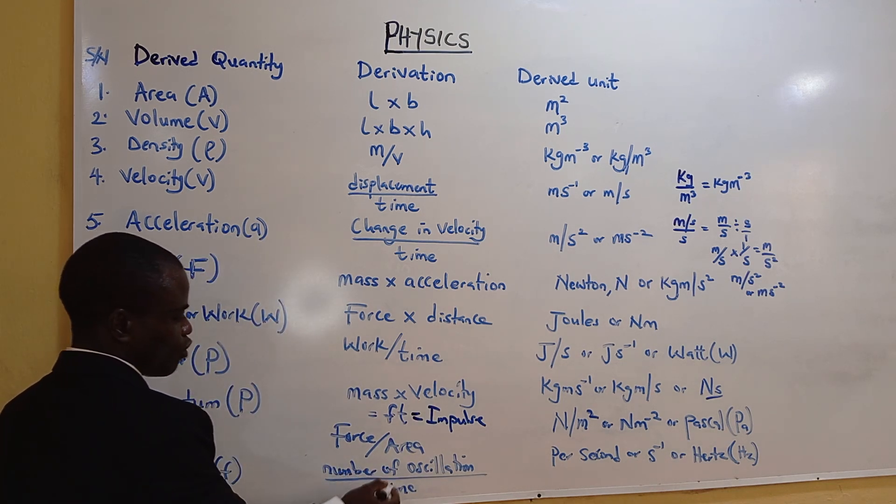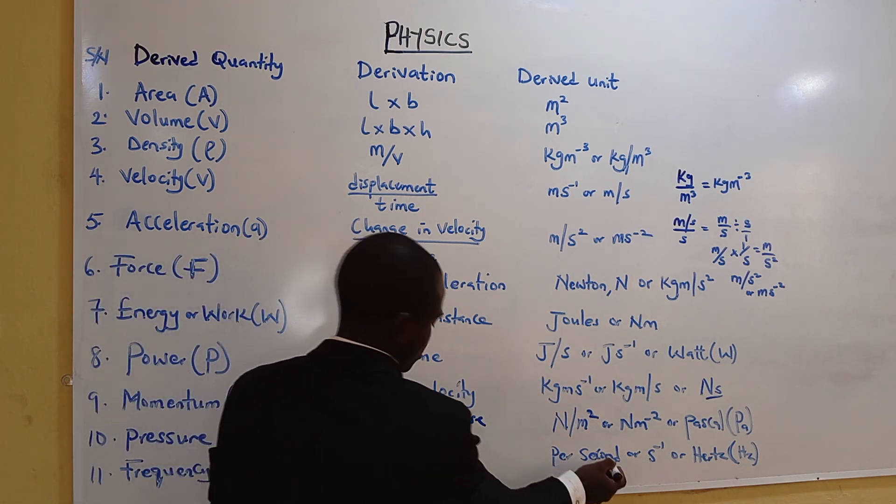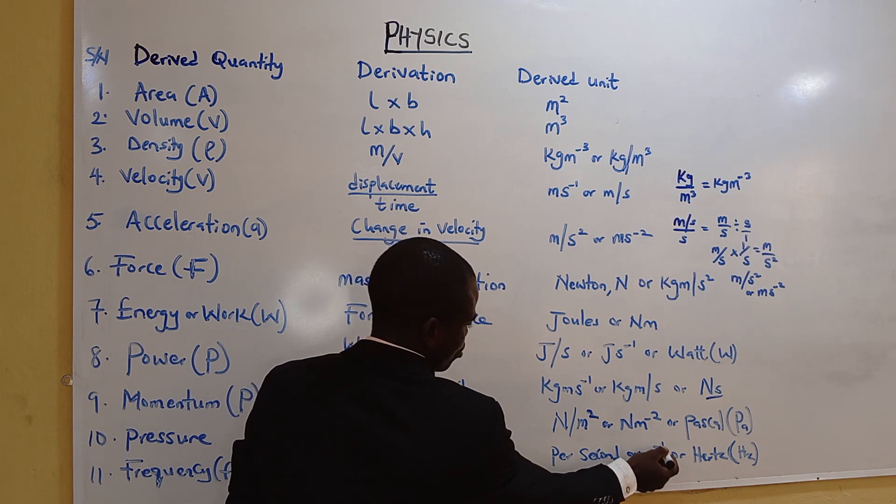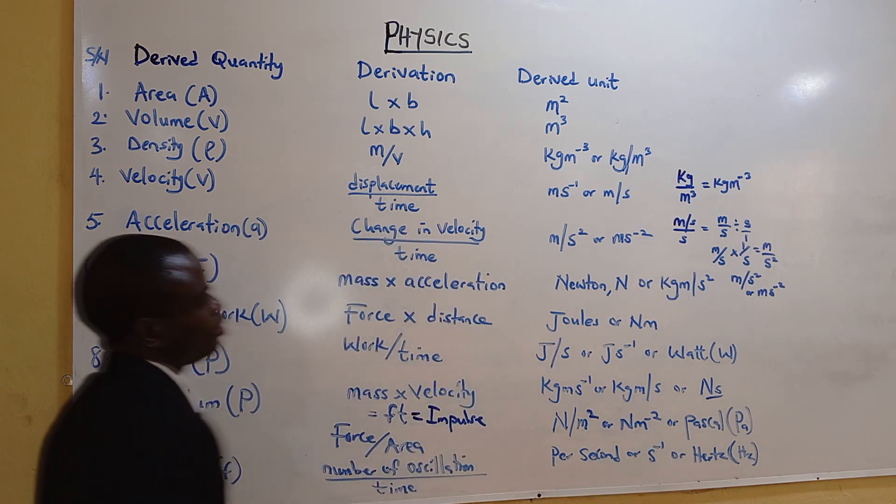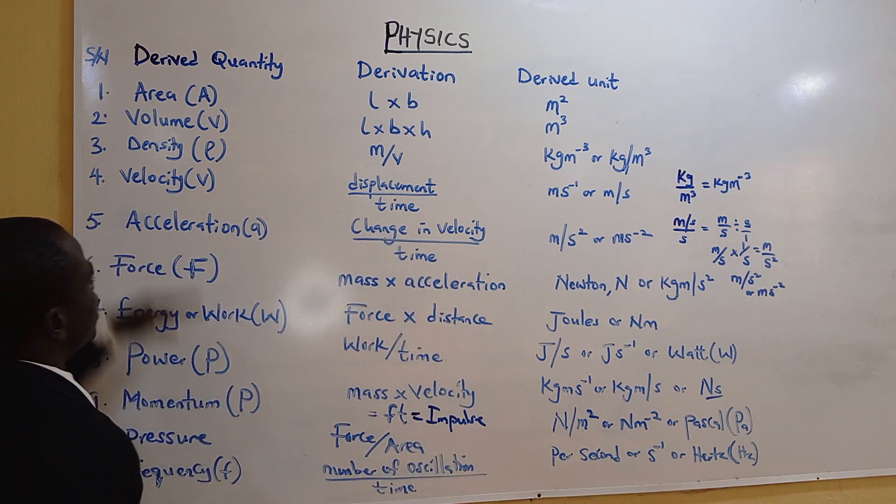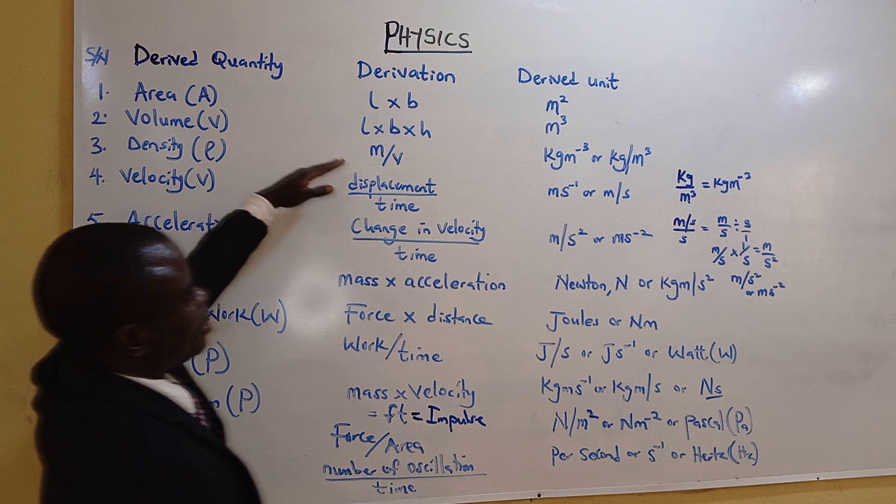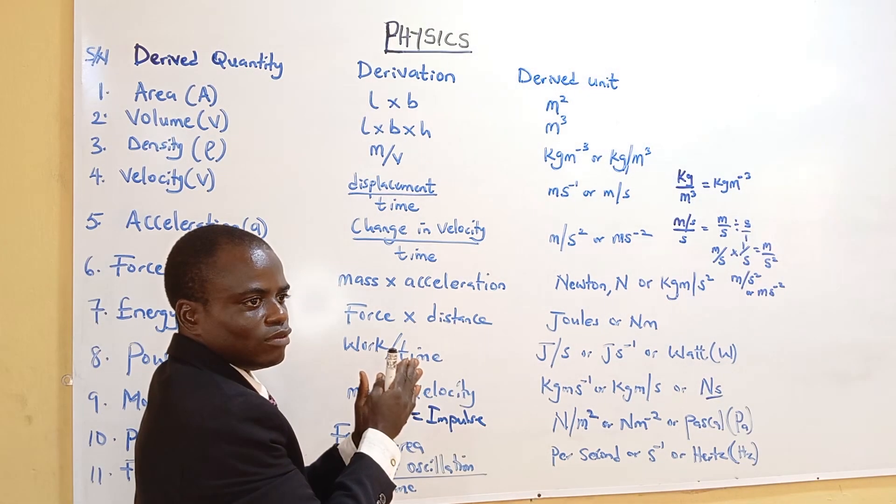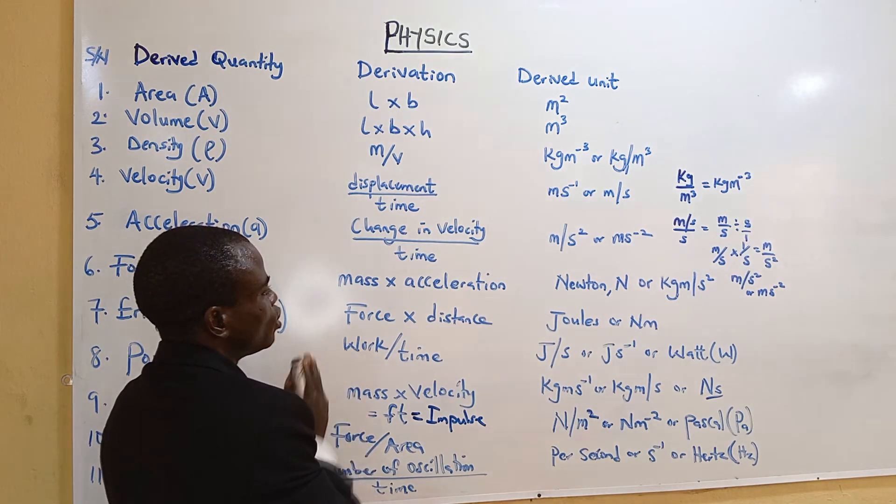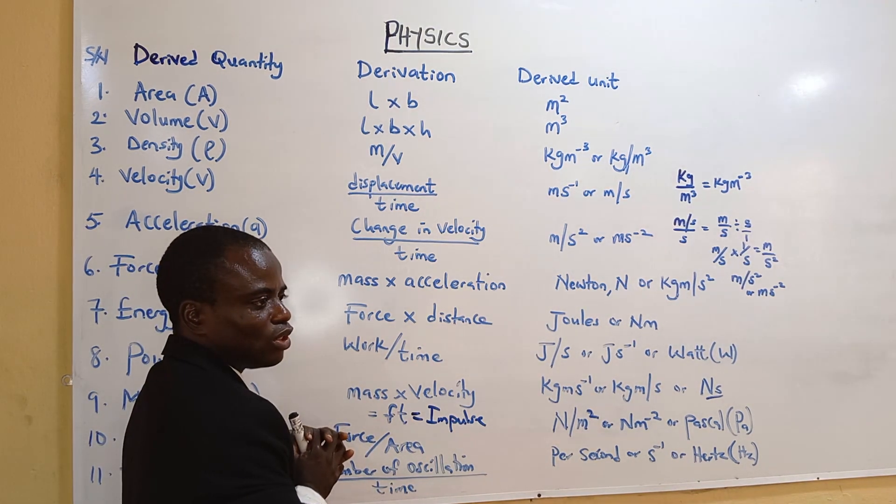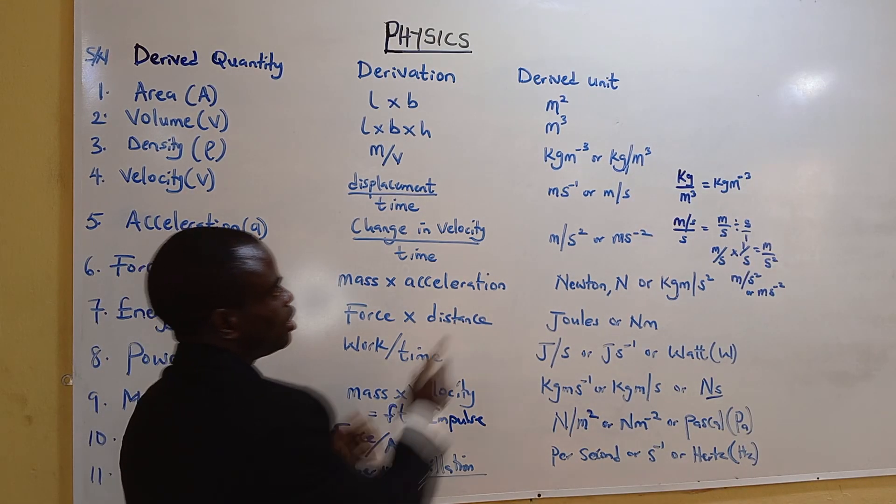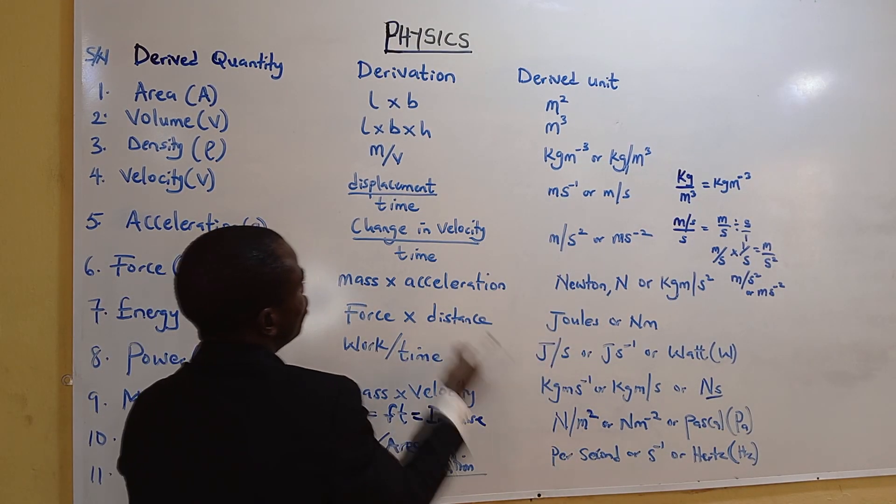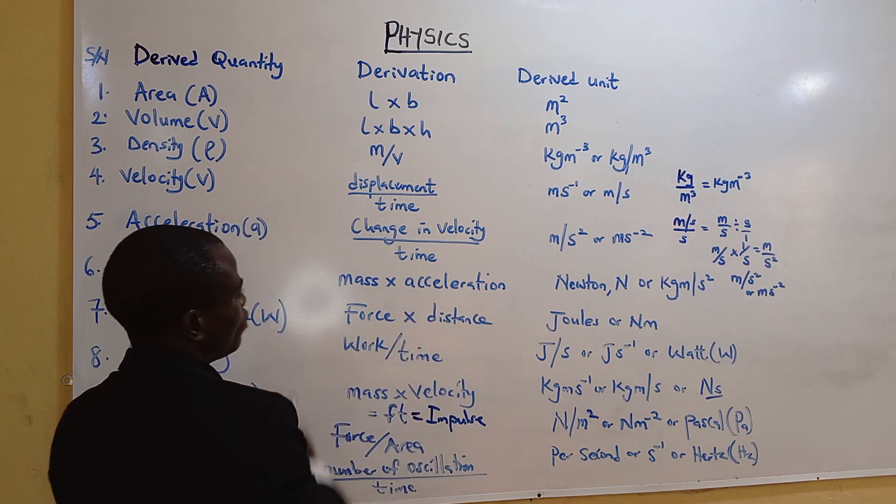Frequency is number of oscillation over time. It is per second. Or S to the minus one, or hertz. These are what we call derived quantity. These are the derivations. You see that we join fundamental quantity together to give us derived units or derived quantity. And this is the derived unit for the derived quantity.